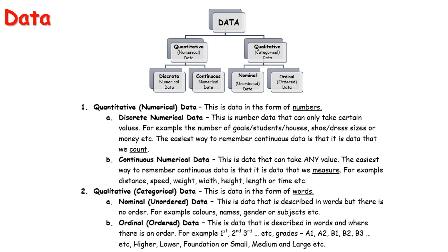Underneath quantitative we have discrete and continuous. Discrete means there are jumps; continuous means all the numbers can be used. An easy way to remember this: discrete numbers you count, continuous you measure. So for example, discrete would be the number of students in a class; continuous would be something like your height, which is something you measure.